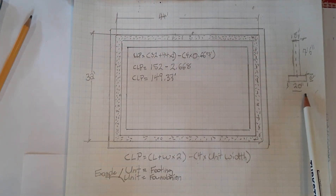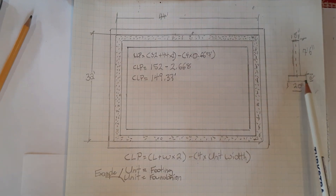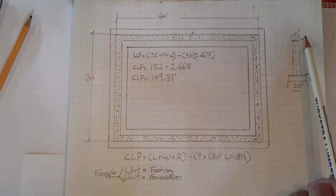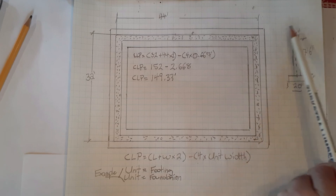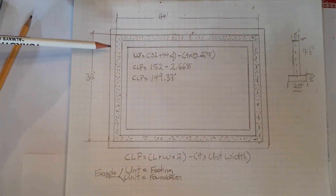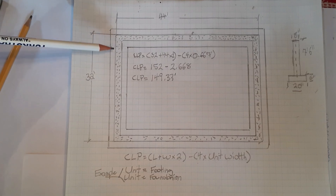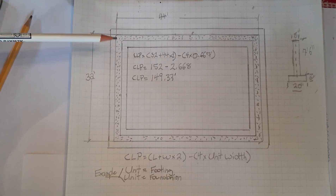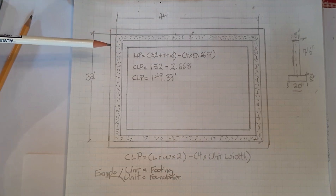If we look over here on a little elevation drawing, we can see that the footing is 20 inches wide and 6 inches tall, the foundation wall itself is 7 foot 6 inches tall, and the foundation wall is 8 inches wide. We need to find concrete volume for the footing, and we could possibly need to find concrete volume for the foundation wall itself.